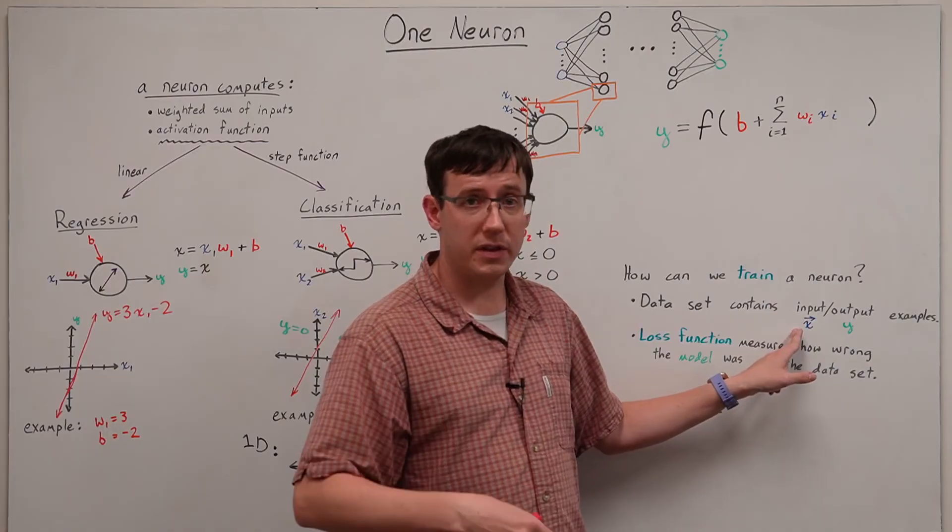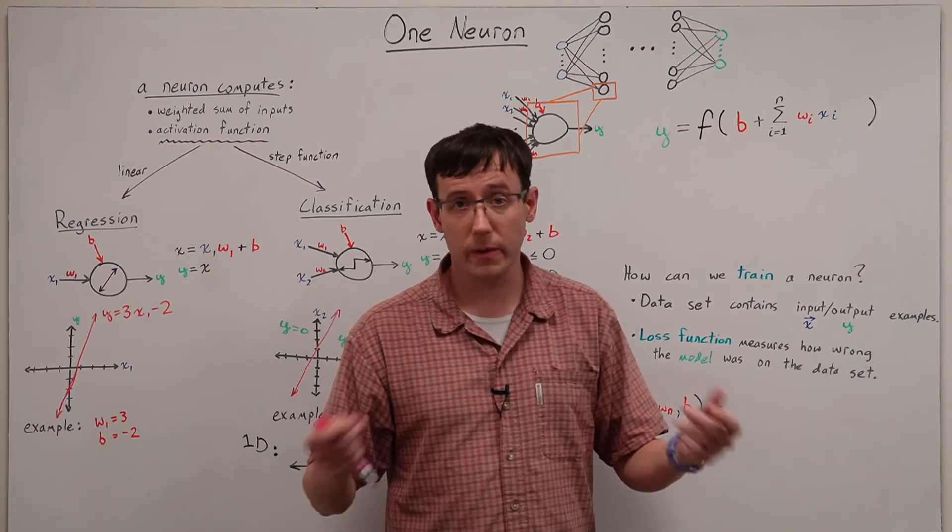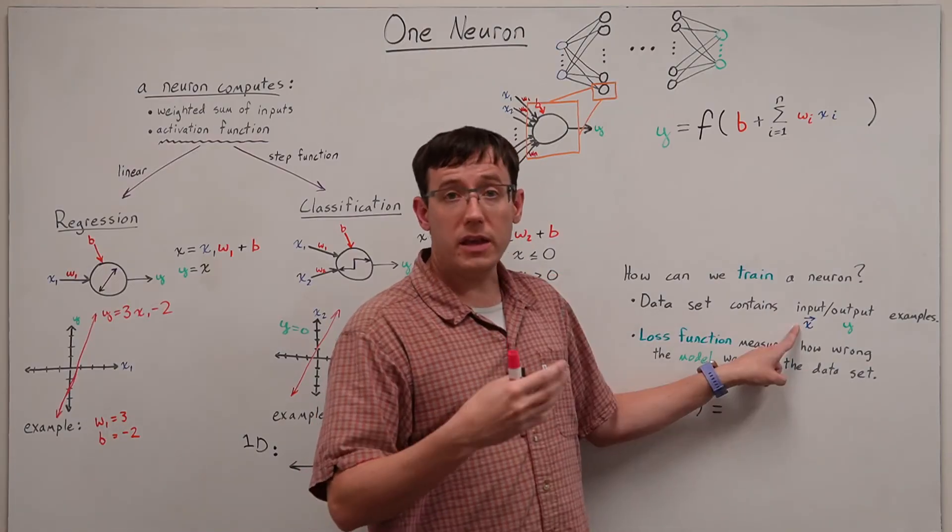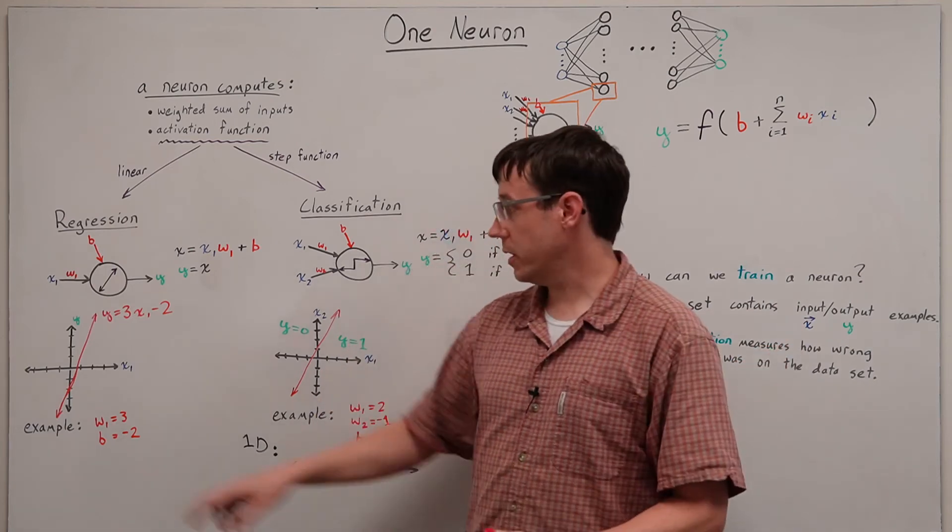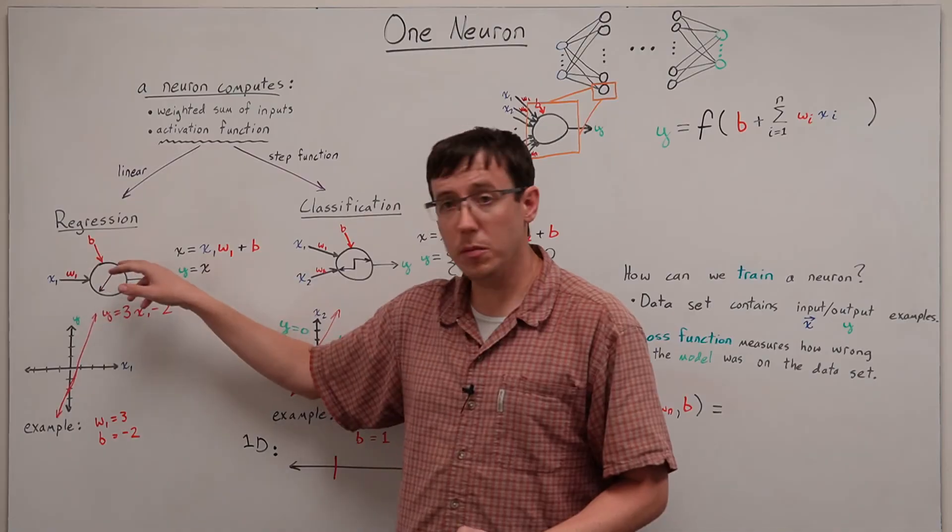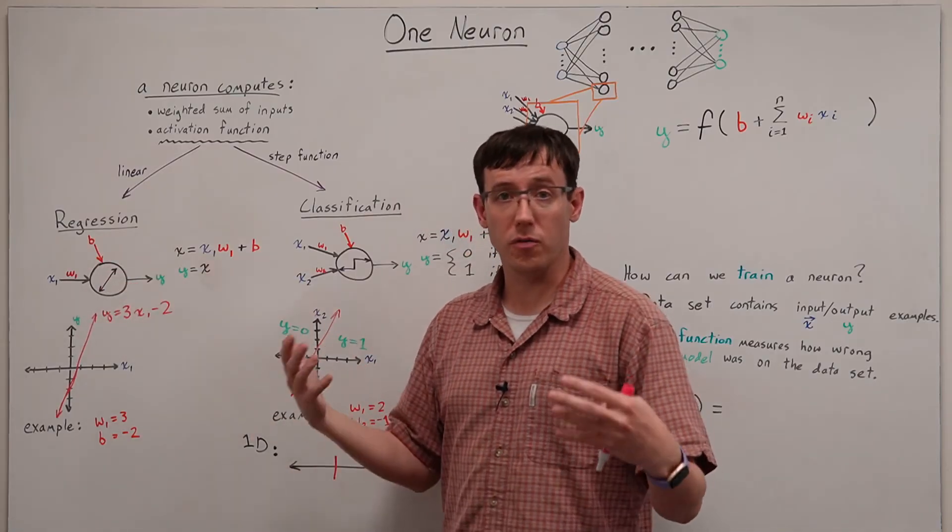The input examples in the data set can in principle have various dimensions, and the dimension of the input examples will determine the number of inputs and therefore the number of weights in our single neuron model.